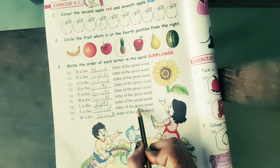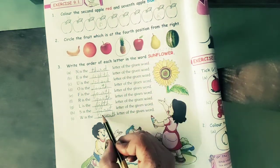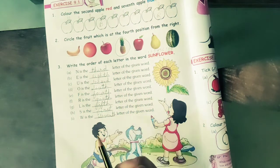S is the letter of the given word. S is at first number position. So spelling of first is F, I, R, S, T, first. Okay.